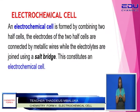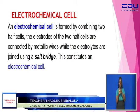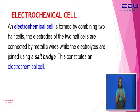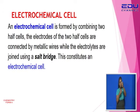Let's look at what is an electrochemical cell. An electrochemical cell is formed by combining two half cells, whereby the electrodes of the two half cells are connected by metallic wires, and the two electrolytes — or rather the solutions within the half cells — are connected using a salt bridge. This arrangement constitutes what we call an electrochemical cell.